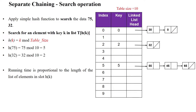Welcome to search operation in hashing. Here the hashing approach is separate chaining. We will apply a simple hash function to search whether the given data 75 and 32 are available in the hash table or not. So we will apply the hash function.